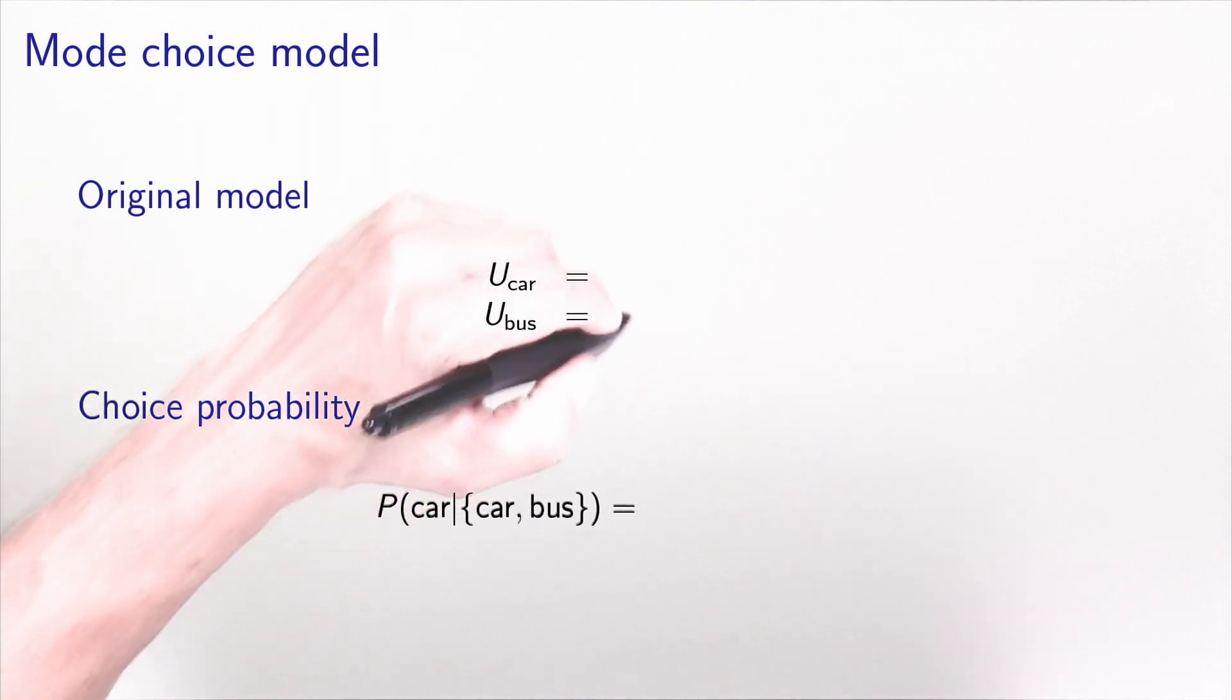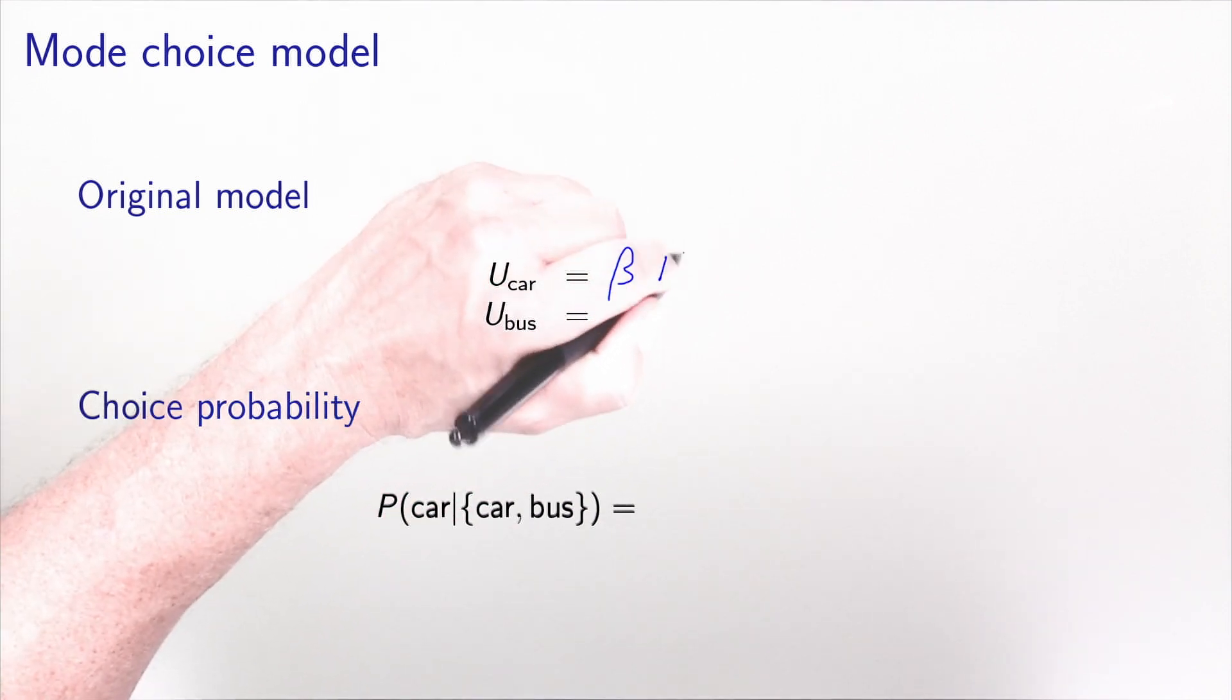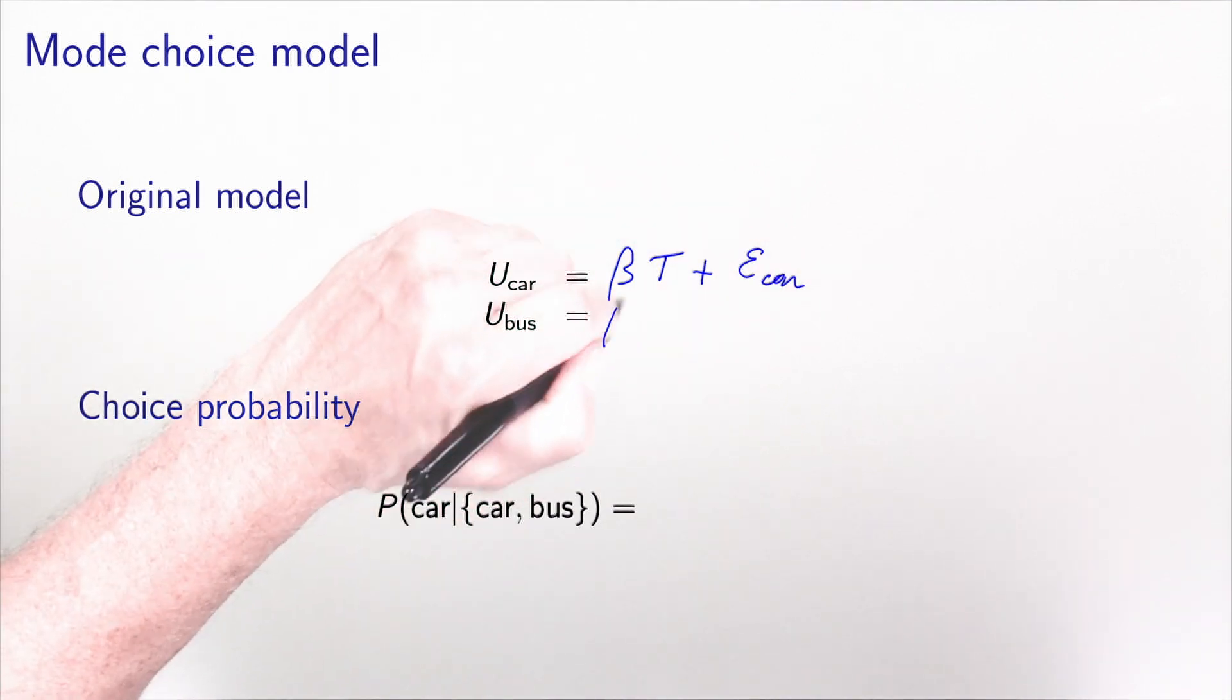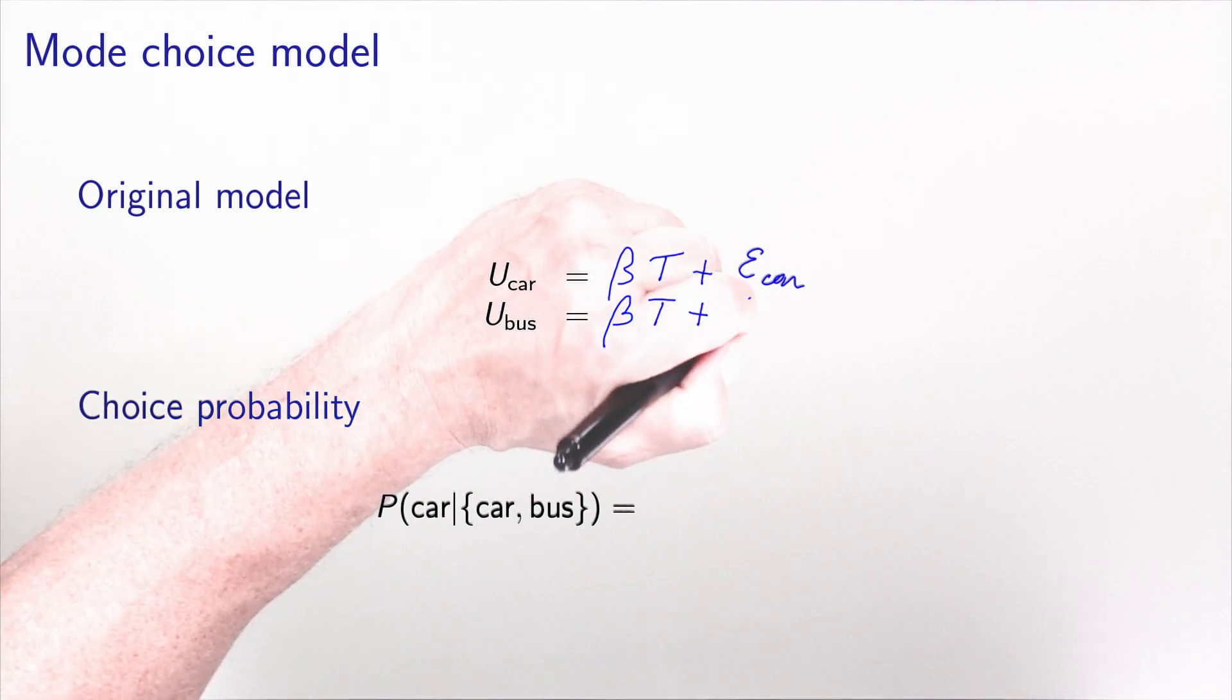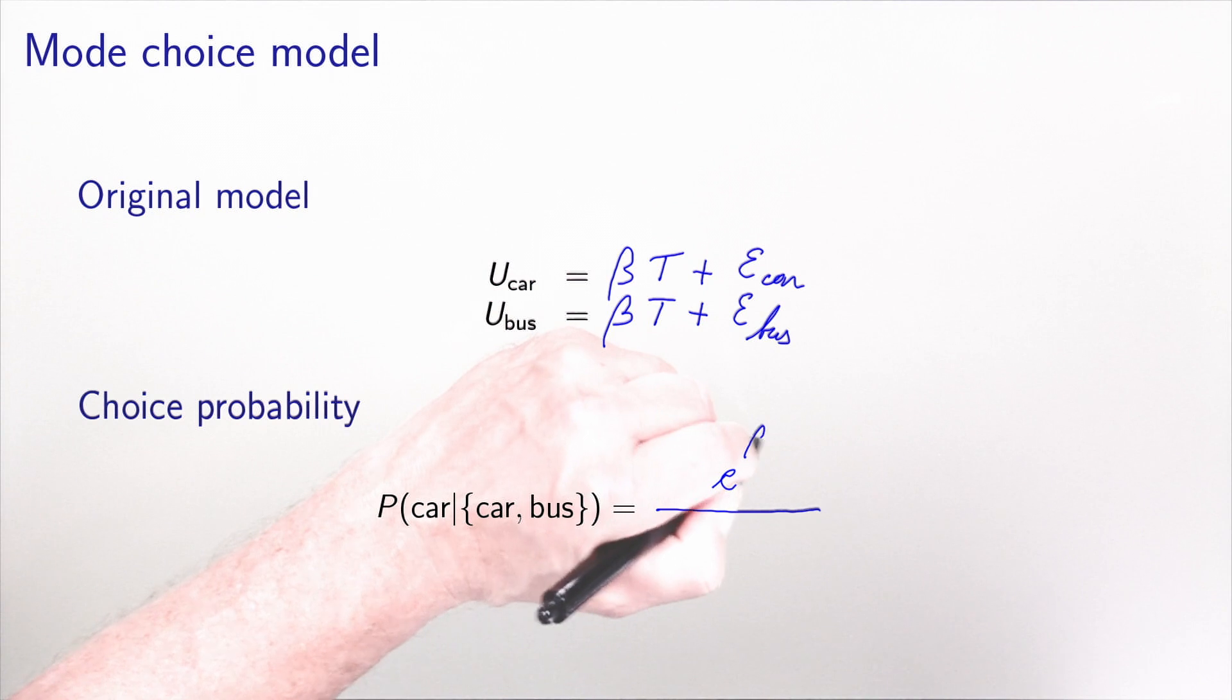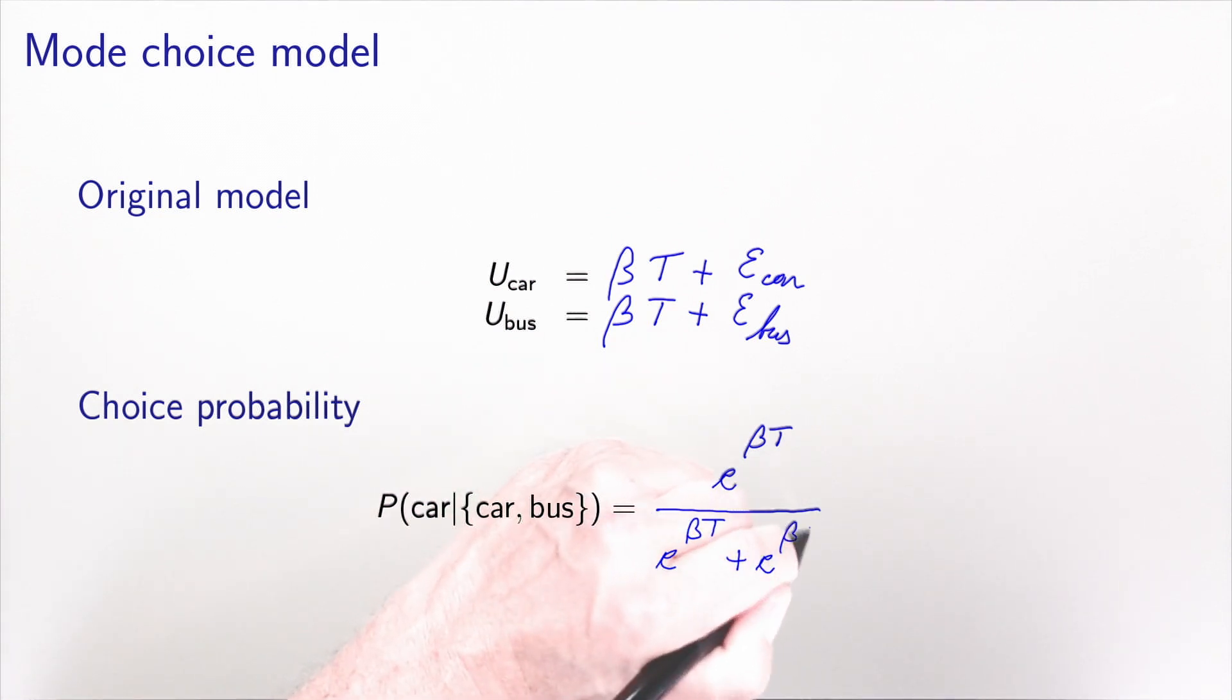We can write the utility of car as beta t plus epsilon car, and the same for bus, beta t plus epsilon bus. If we work with a logit model, we can write the choice probability for car, which will be e to the beta t divided by e to the beta t plus e to the beta t. And this is equal to one half.